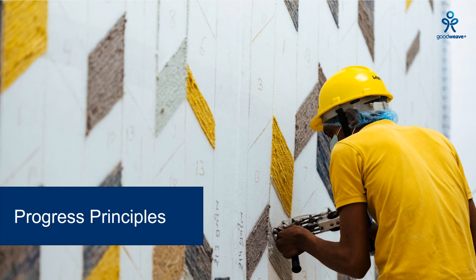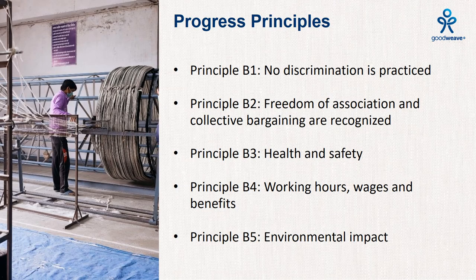The new standard continues to include progress principles, which enable GoodWeave to promote non-discrimination, freedom of association and collective bargaining, and decent working conditions such as health and safety, and legally compliant working hours, wages, and benefits. As with the GoodWeave RUG standard, criteria in these sections are designed to encourage continuous improvement over time, and licensing and certification is not contingent on compliance with them. These principles are assessed during initial audits and revisited during each annual audit. There have been no major changes to the progress principles, rather just a few changes in how they are organized in the new standard.